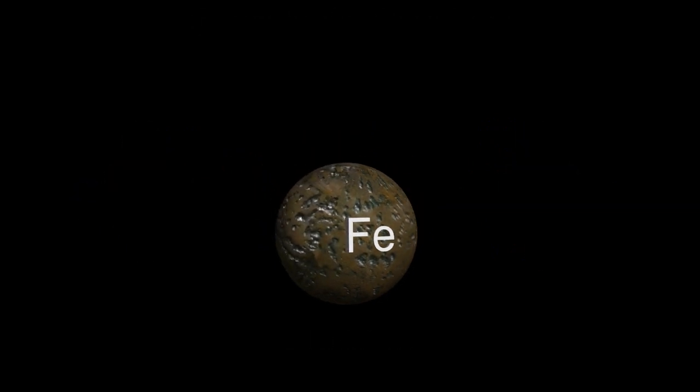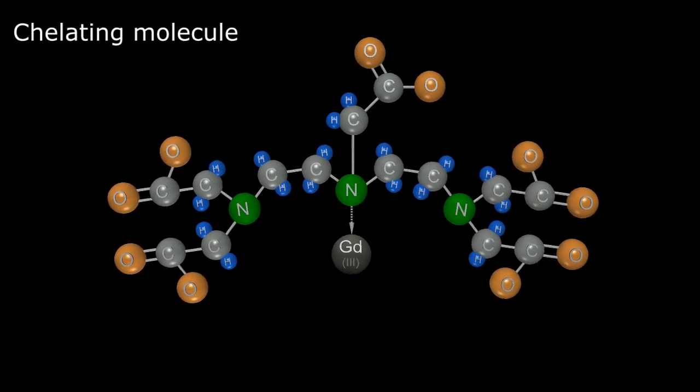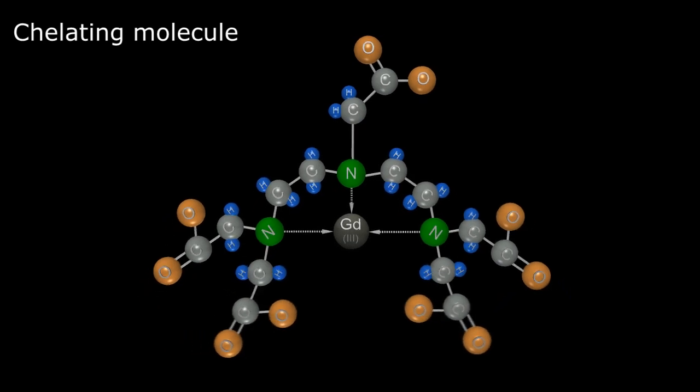This type of bonding is useful in chelating molecules, where nitrogen and oxygen moieties bind to heavy metals, allowing them to be removed from foods or the body.